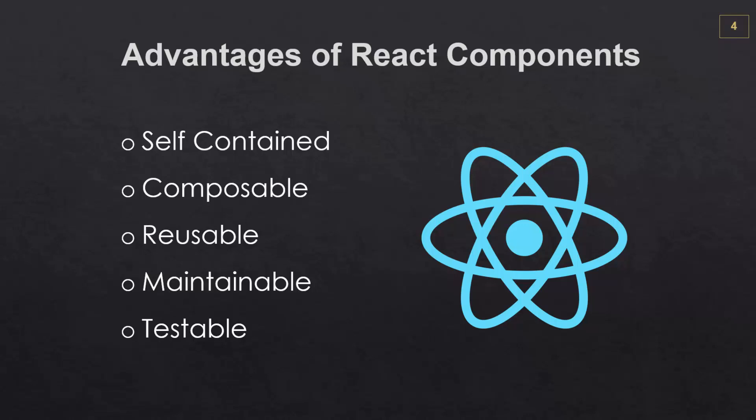So components are self-contained — everything, all the functionality that has to do with a certain part of the UI is contained in the component: all the functions, all of the state, the properties, everything. Components are composable — they can be assembled in various combinations to satisfy whatever the requirements are. They are reusable, so you can reuse them in the same application as well as in another application. They're also more maintainable and they are testable.